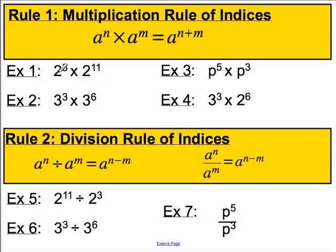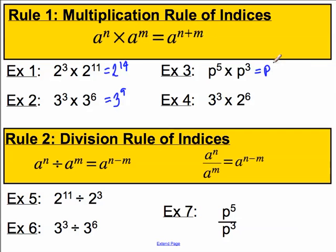Let's have a go at a few examples. 2 to the power of 3 multiplied by 2 to the power of 11 — the base number 2 is the same, so we can just add the indices. This must be 2 to the power of 14. Example 2: 3 to the power of 3 multiplied by 3 to the power of 6 must be 3 to the power of 9. Next, with algebra: p to the 5 multiplied by p to the 3 must be p to the 8.